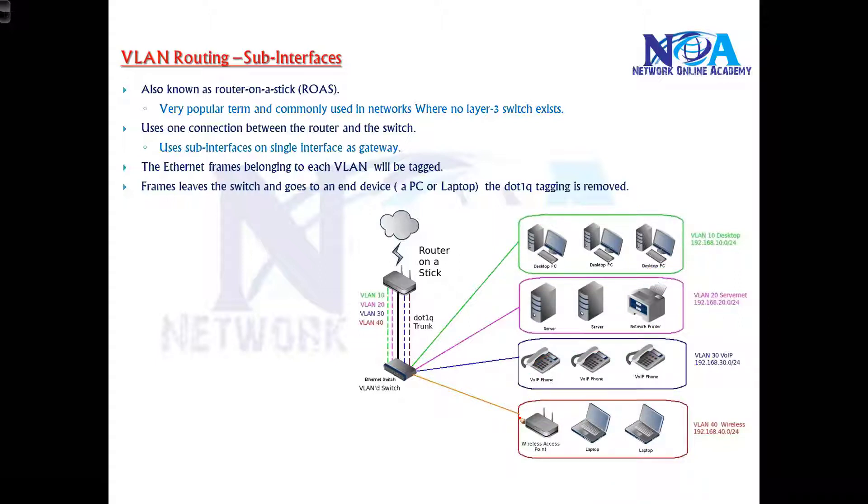Now here what we'll be doing is we still use a router here. So in the first two solutions, as I said, the previous one we need a separate physical gateways, right? And we are not using it now. This time we'll be using a router with sub-interfaces.